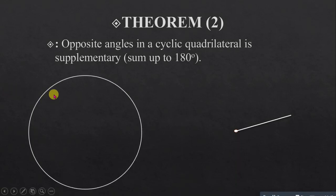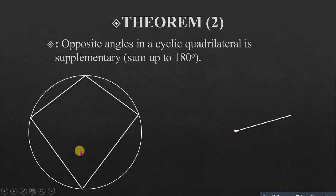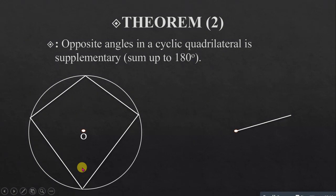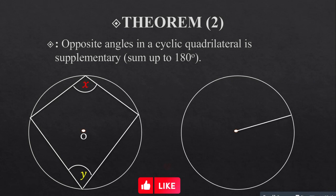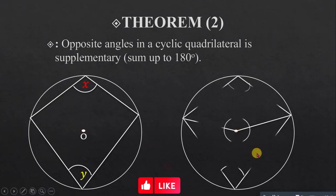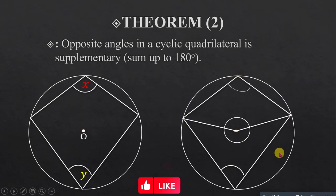We have a circle with two pairs of lines forming a quadrilateral inside it. The opposite angles in the cyclic quadrilateral — the angle here and the angle here — will always sum up to 180 degrees. We can label them x and y, and x plus y will always equal 180 degrees.